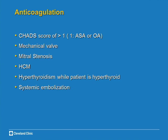However, there are other scenarios where we must use anticoagulation in patients with atrial fibrillation outside the CHADS score. These indications include: the patient has a mechanical valve, or they have moderate to severe mitral stenosis — because this combination of AFib and mitral stenosis is very thrombogenic. Patients with hypertrophic cardiomyopathy, even if their CHADS score is zero, need anticoagulation. Patients who are hyperthyroid need systemic anticoagulation until they become euthyroid. And systemic embolization is also an indication.